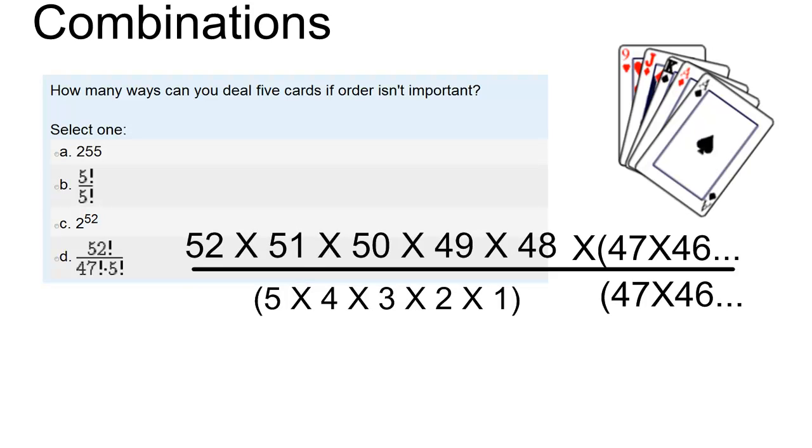And so we've seen the top expression is equal to 52 factorial. This part of the expression is equal to 47 factorial. By taking 52 factorial and dividing by 47 factorial, I essentially get rid of these two parts.